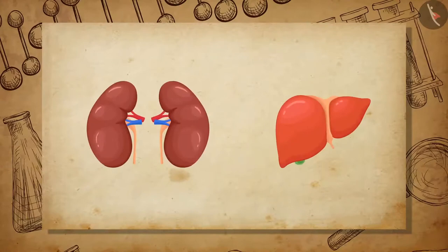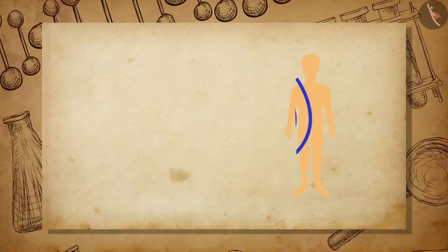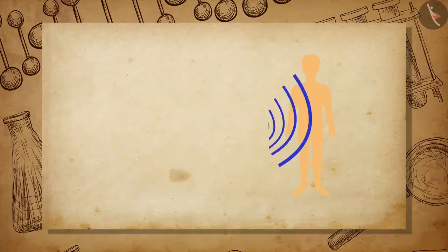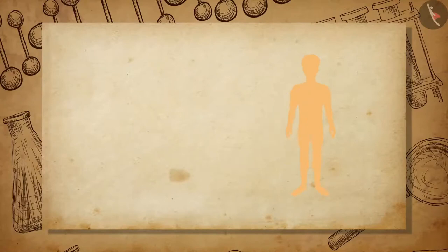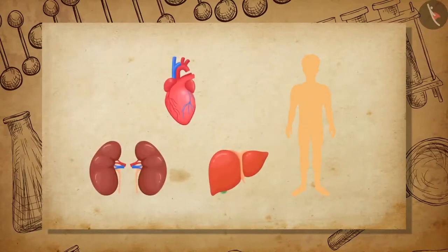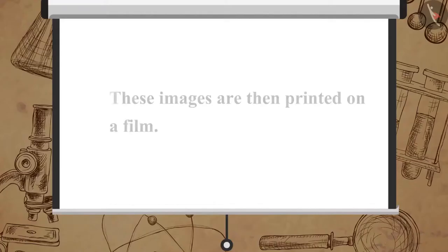Ultrasonic waves are also used in ultrasound scanners to take pictures of internal organs like liver, kidney, etc. These waves are passed through the tissues of the body and then converted into electrical signals which are used to take images of the organs. These images are then printed on a film.